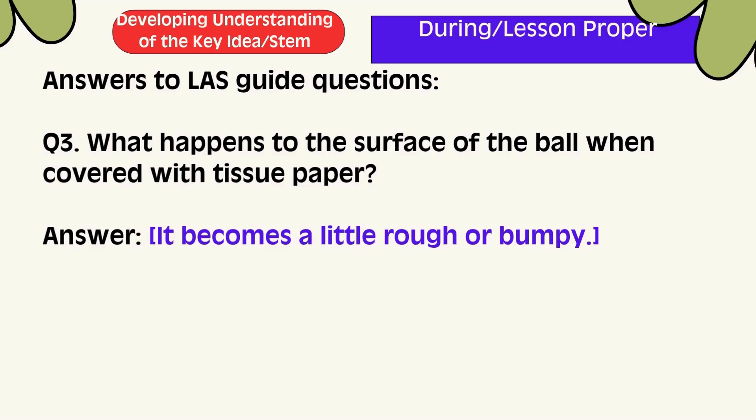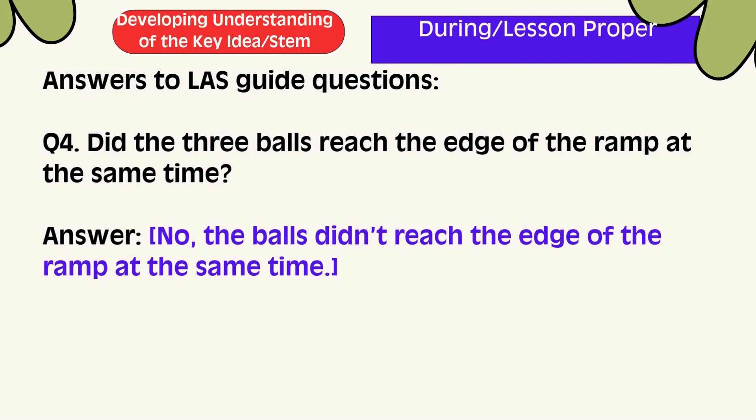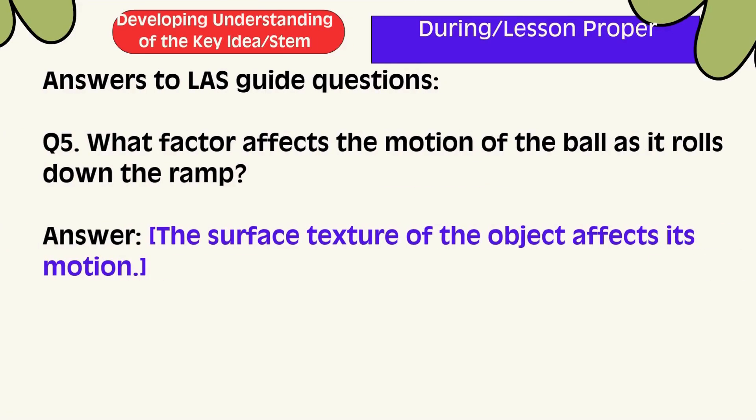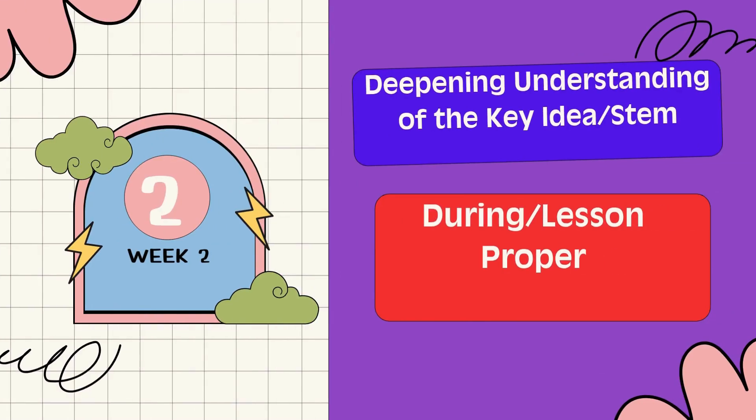Question 3: What happens to the surface of the ball when covered with tissue paper? It becomes a little rough or bumpy. Question 4: Did the 3 balls reach the edge of the ramp at the same time? No, the balls didn't reach the edge of the ramp at the same time. Question 5: What factor affects the motion of the ball as it rolls down the ramp? The surface texture of the object affects its motion.